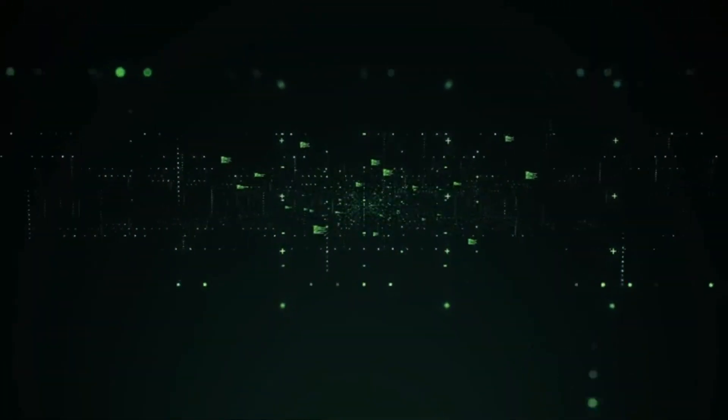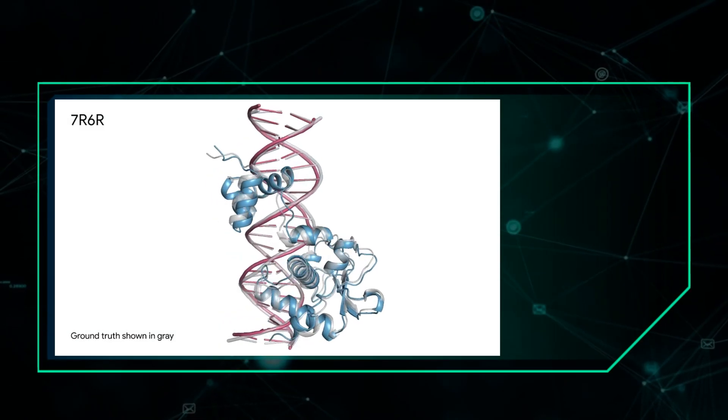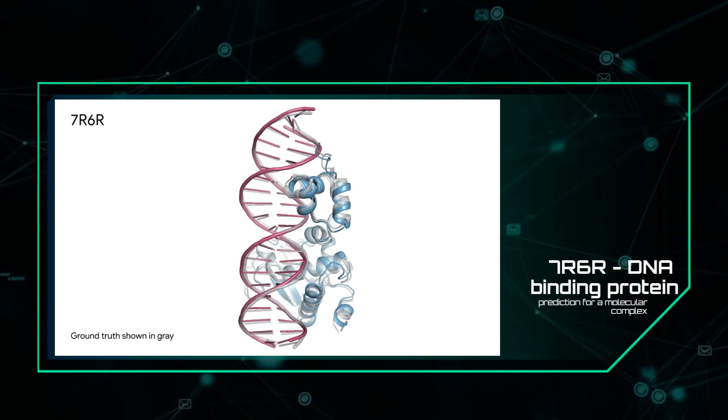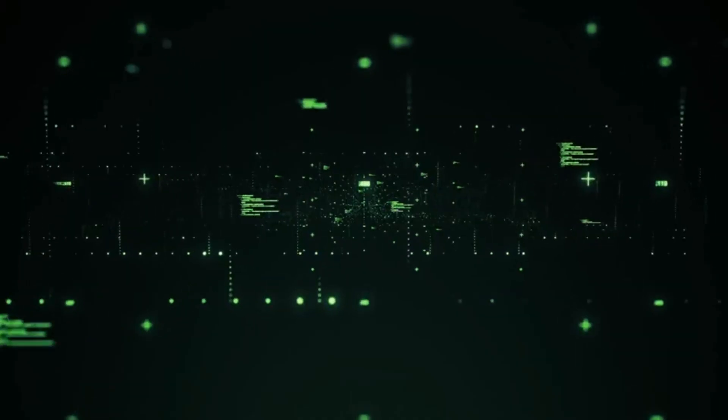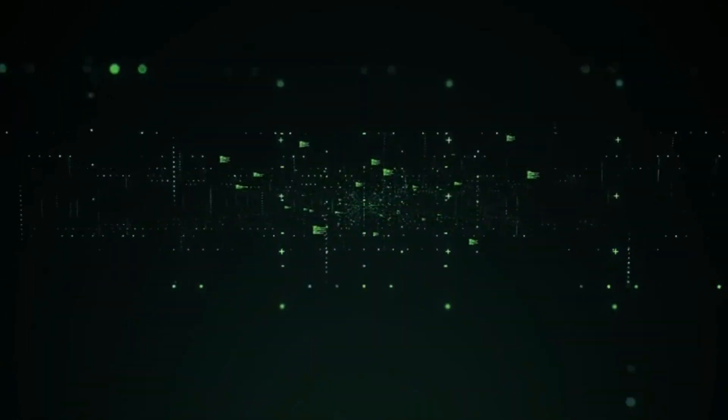With its vast library of molecular structures, AlphaFold3 empowers researchers to combine molecules and generate stunning 3D models using a diffusion method. This same AI system has been used by image generators to assemble photos, showcasing the limitless possibilities of AlphaFold3.